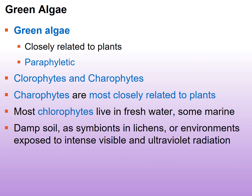Most chlorophytes live in fresh water, though some are marine. Some chlorophytes actually live in damp soil. Some of them are symbionts in lichens, which we'll discuss when we get to the chapter on fungi. And some of them live in environments exposed to very intense visible light and also UV, or ultraviolet, radiation.